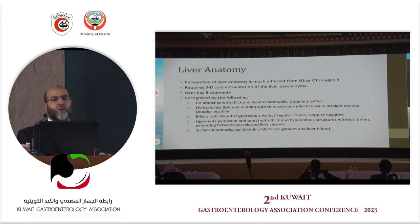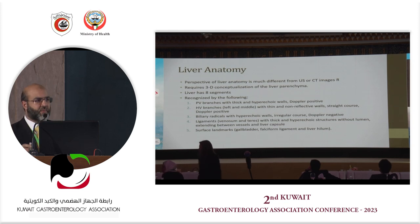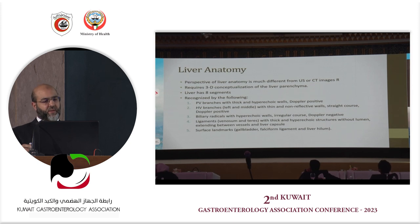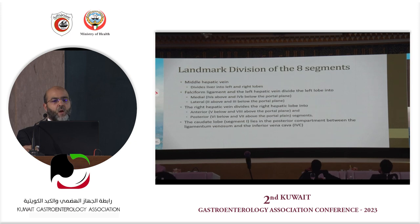The liver anatomy looks a bit different than on conventional ultrasound or CT, because here you need 3D conceptualization. The liver has eight segments. To know which segment is which, you need the anatomical landmarks. Portal vein branches appear as thick hyperechoic structures, Doppler-positive. Hepatic vein branches appear thin and non-reflective. Bile radicals have an irregular course and are Doppler-negative. Ligaments appear hyperechoic with no lumen.